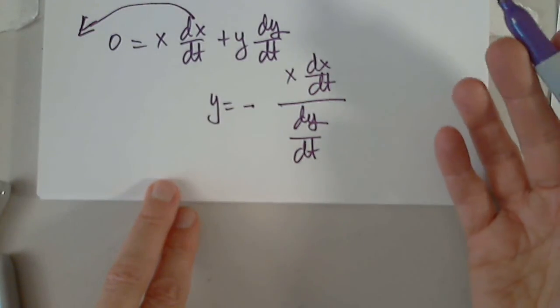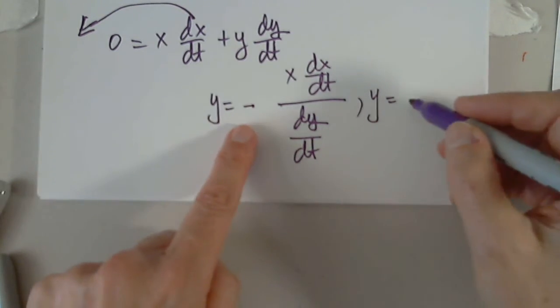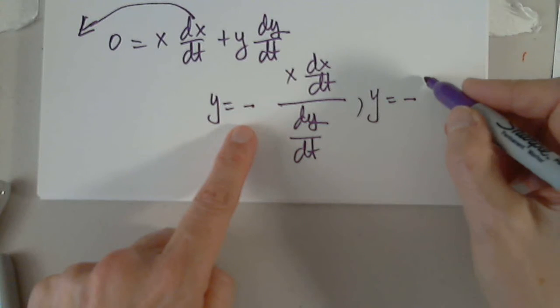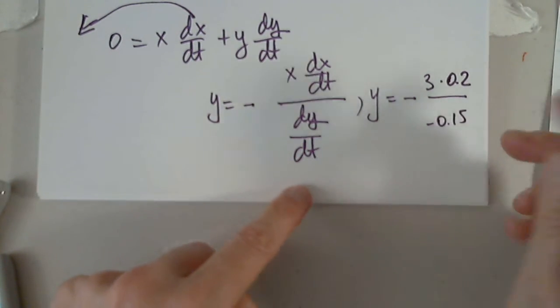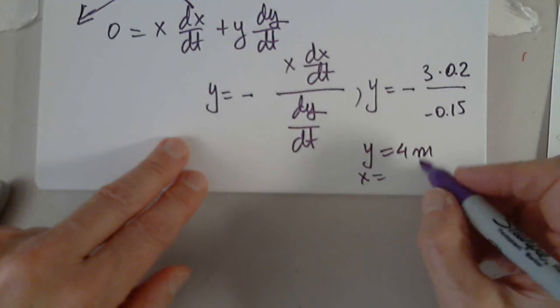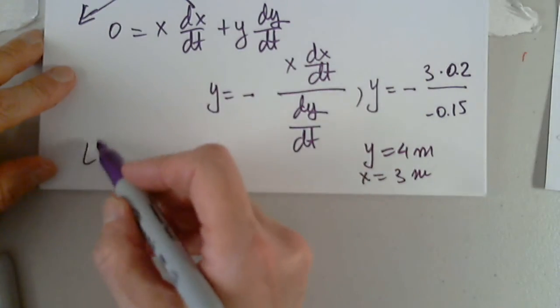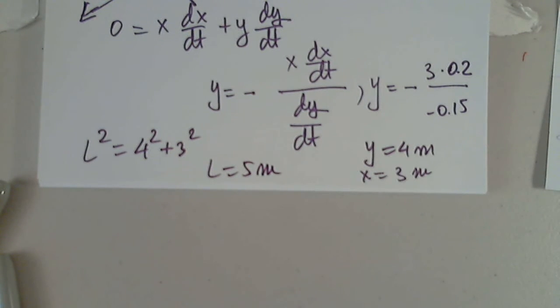So y will be negative x dx/dt divided by dy/dt. So this is the y at the instant when x is 3 and dx/dt is 0.2. That's all I need. So then y will be negative. X is given to us to be 3, dx/dt is 0.2, and dy/dt is negative 0.15. So 3 times 0.2 is 0.6, and 0.6 divided by 0.15, I got 4. Wonderful. These are even Pythagorean numbers. If y equals 4 meters and x equals 3 meters, obviously I know the answer. L squared equals 4 squared plus 3 squared, 16 plus 9, so L is 5. The length of the ladder is 5 meters.